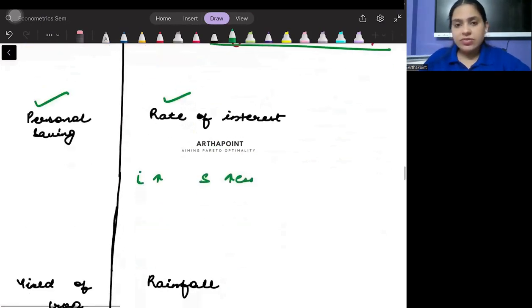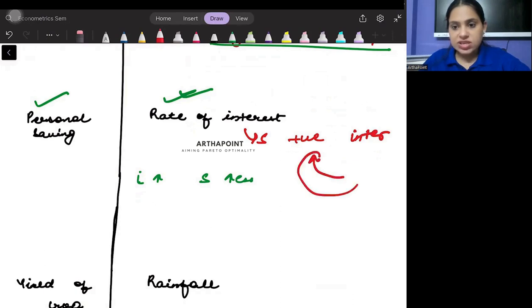Personal savings and rate of interest. Clearly we know that savings is a positive function of interest rate and the more the interest you get on the savings, the more the amount of savings you will be doing.